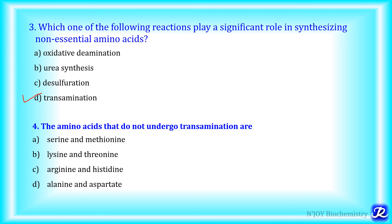MCQ 4: The amino acids that do not undergo transamination are — option A: serine and methionine; option B: lysine and threonine; option C: arginine and histidine; option D: alanine and aspartate. We know that amino acids which do not undergo transamination include lysine, threonine, proline and hydroxyproline. So the answer is option B — lysine and threonine.